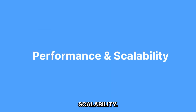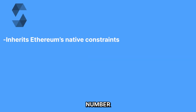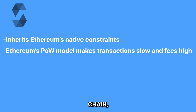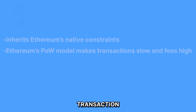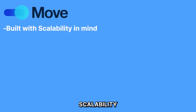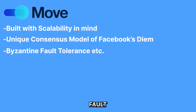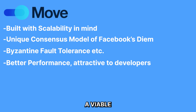Next is performance and scalability. Solidity inherits a number of constraints from the Ethereum blockchain, which limits its scalability and performance. Due to the proof-of-work nature of the Ethereum chain, smart contracts running on it inherit the limitations of the consensus model, leading to slower transaction times and higher fees. Move on Sui, however, is built differently. It is built with scalability in mind, using Byzantine fault tolerance and a number of other features. Move offers better performance, making it a viable option for developers to create scalable applications.